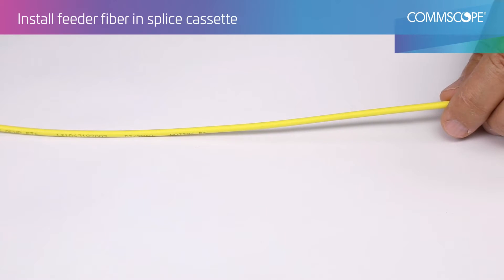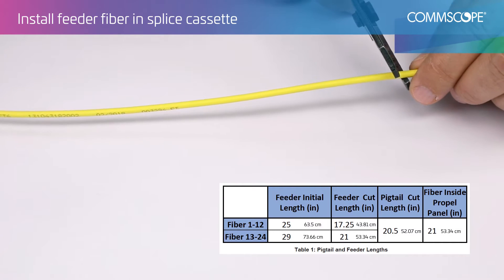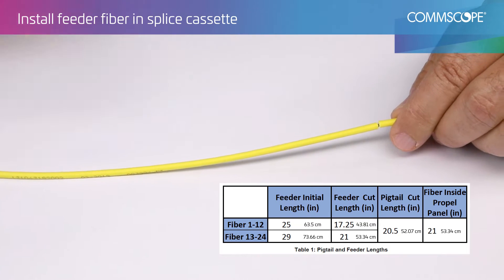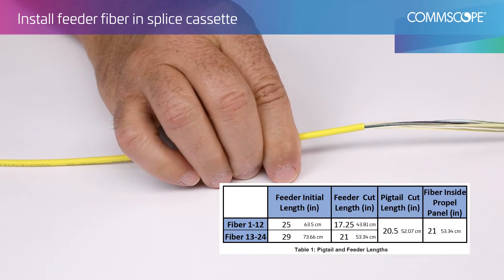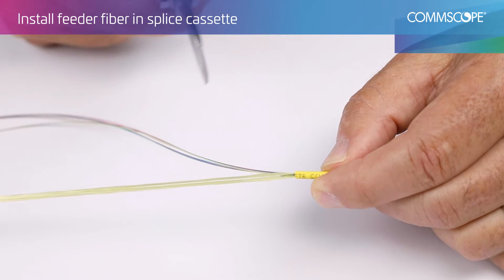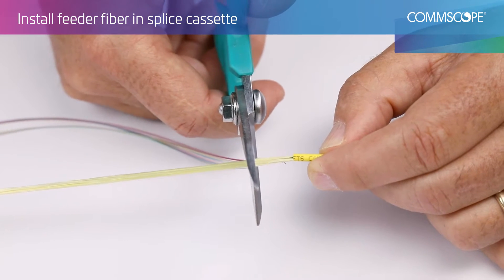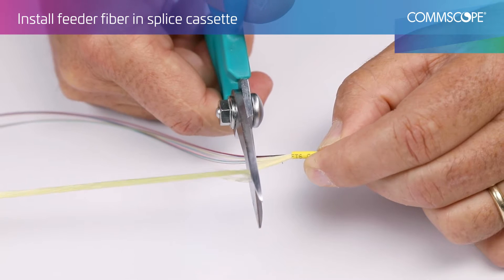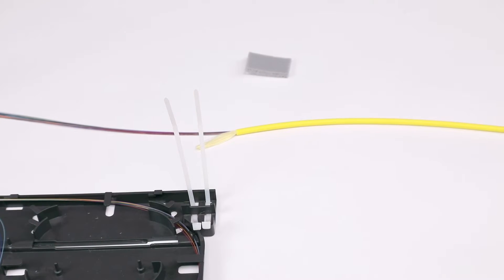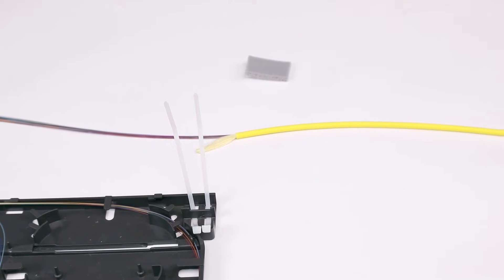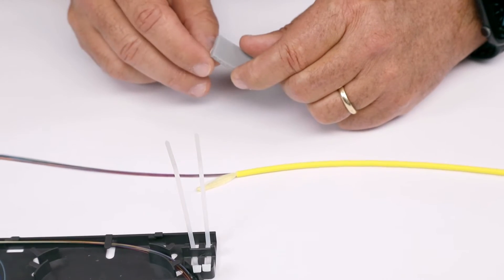Strip fibers to recommended feeder strip length per table 1. Leave approximately 1 inch of strength member. It's recommended to use the supplied gray foam to secure the cable in the splice cassette.